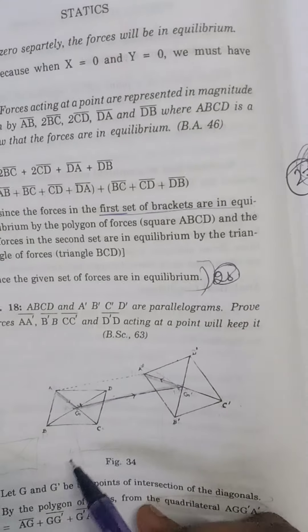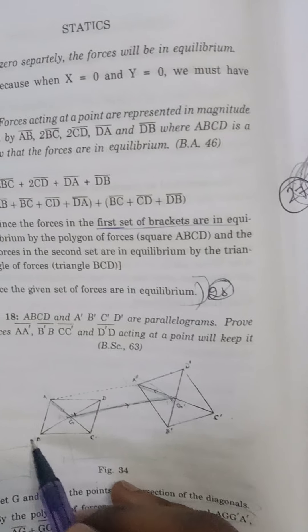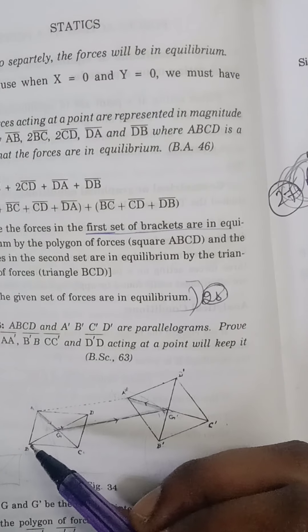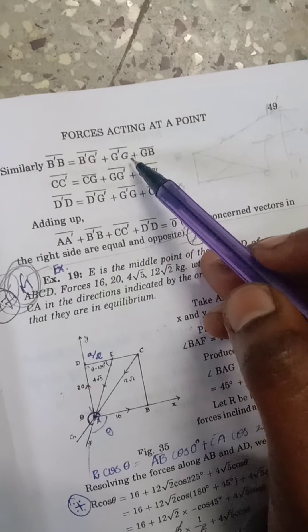Similarly, we have to form B' to B. B' to G', G' to G, and G to B. That is mainly B'G' + G'G + GB.